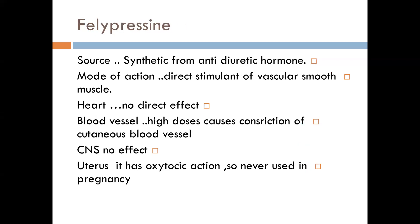Another vasoconstrictor is felypressin — an important synthetic vasoconstrictor derived from anti-diuretic hormones. Its mode of action is direct stimulation of smooth muscles. It has no effect on the heart, therefore it is commonly used for patients with cardiovascular disease. At high doses it causes constriction of cutaneous blood vessels only, with no effect on other blood vessels or the central nervous system. The problem is it has an oxytocin-like action, stimulating contractions of smooth muscle of the uterus — therefore felypressin is contraindicated in pregnant patients.